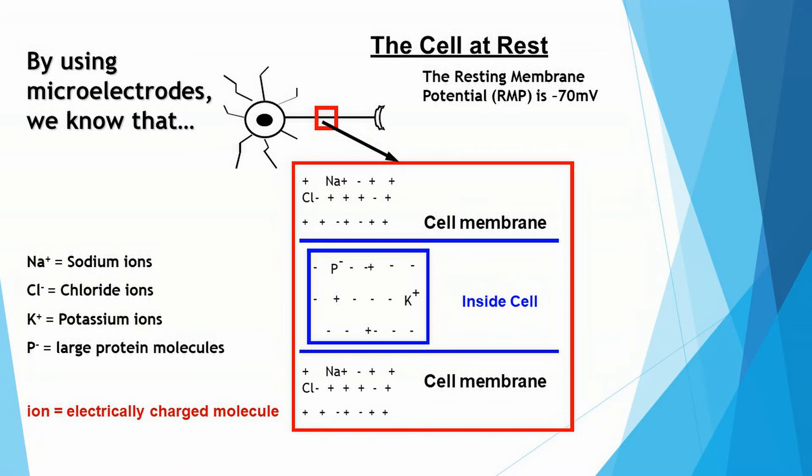So we have ions moving passively in and out of the cell until they achieve a balance. A balance in the context of the amount of each type of ion in and out of the cell. And that's working with the balance of positive and negative ions moving inside and outside the cell. And the result is that the inside of the cell is more negative than the outside when the cell is at rest.